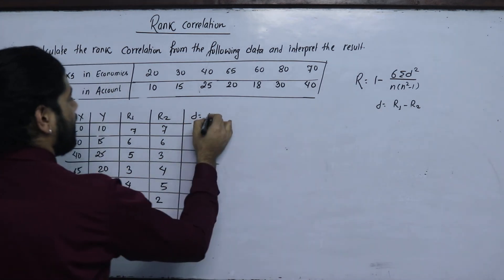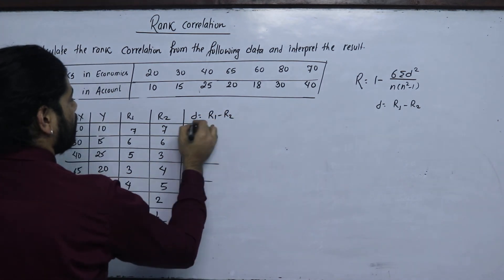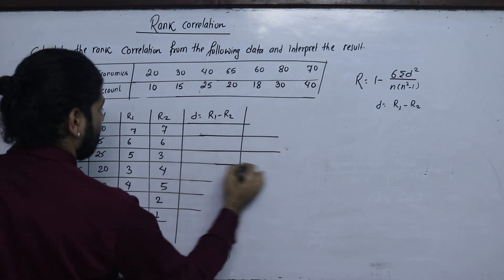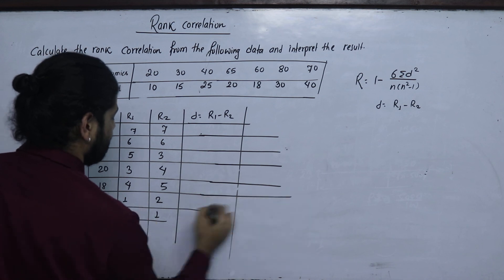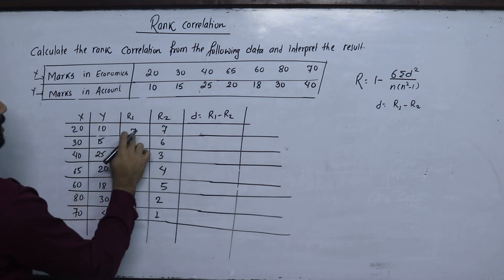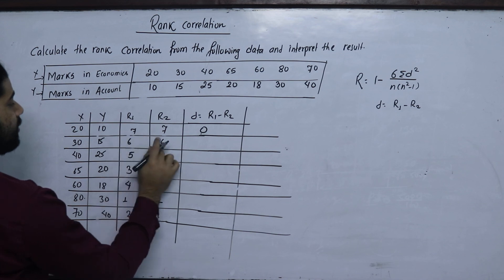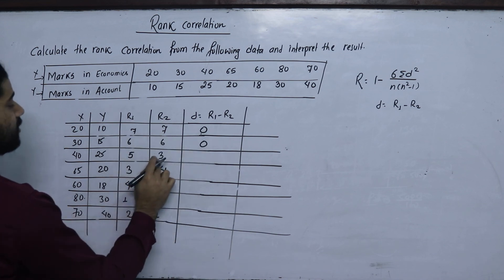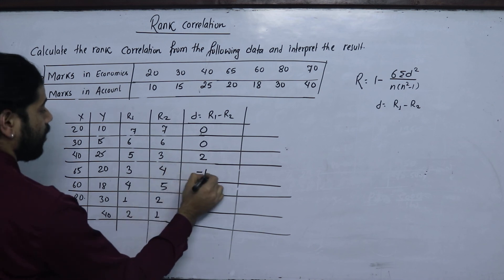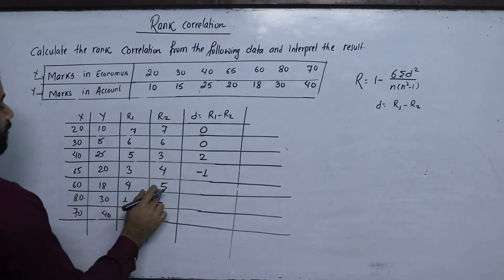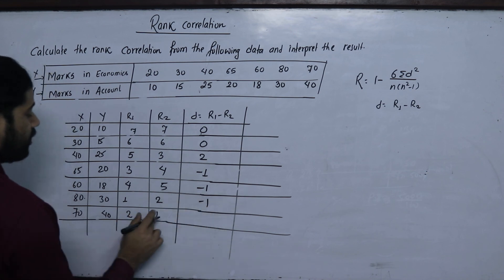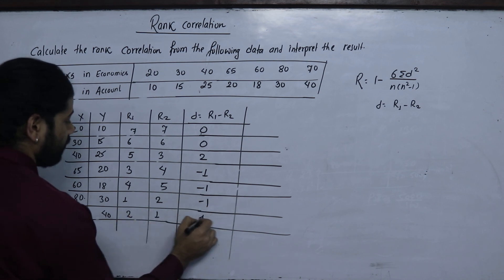D equals R1 minus R2. So computing R1 minus R2: 7 minus 7 = 0; 6 minus 6 = 0; 5 minus 3 = 2; minus 3 minus 4 = minus 1; minus 2, then 4 minus 5 = minus 1; and 2 minus 1 = plus 1.